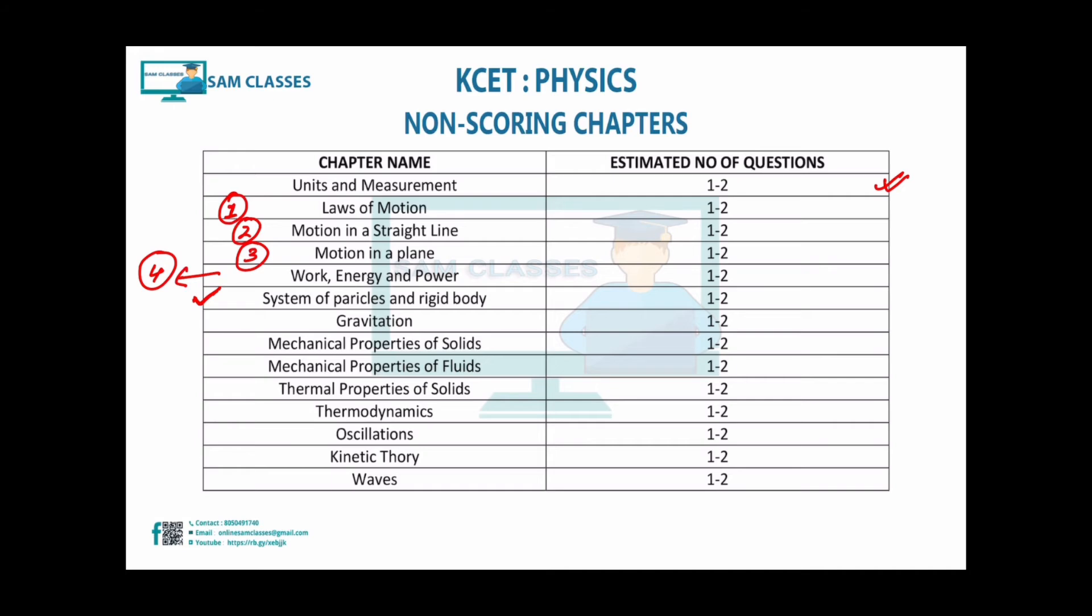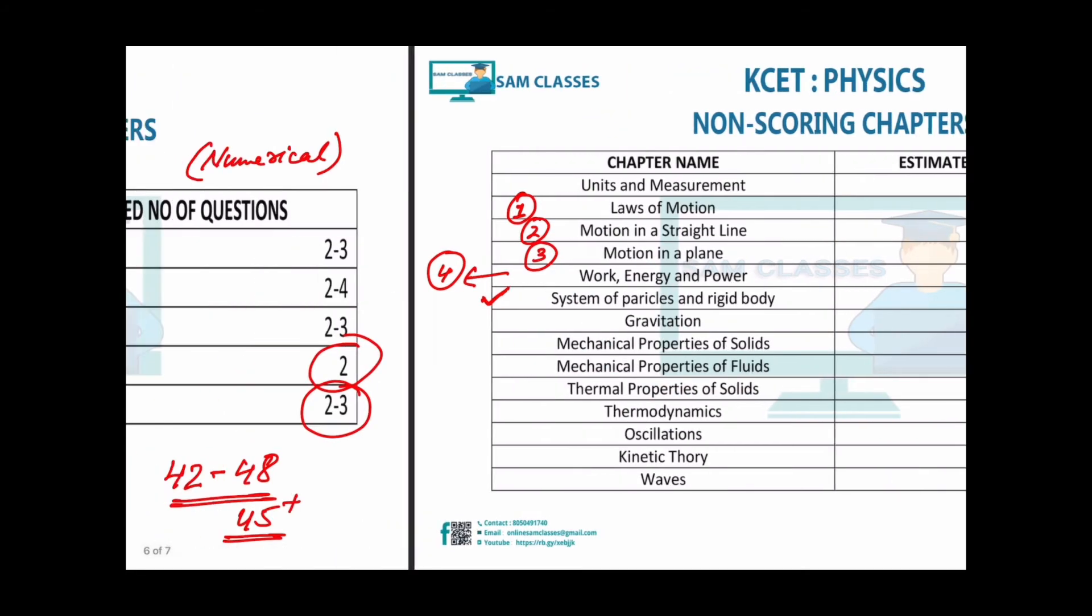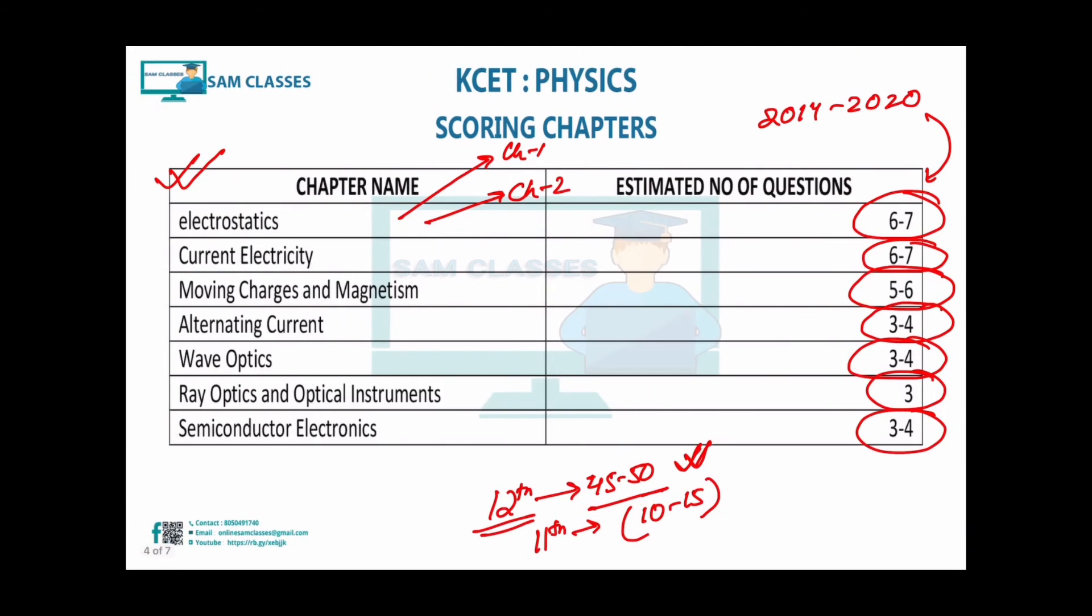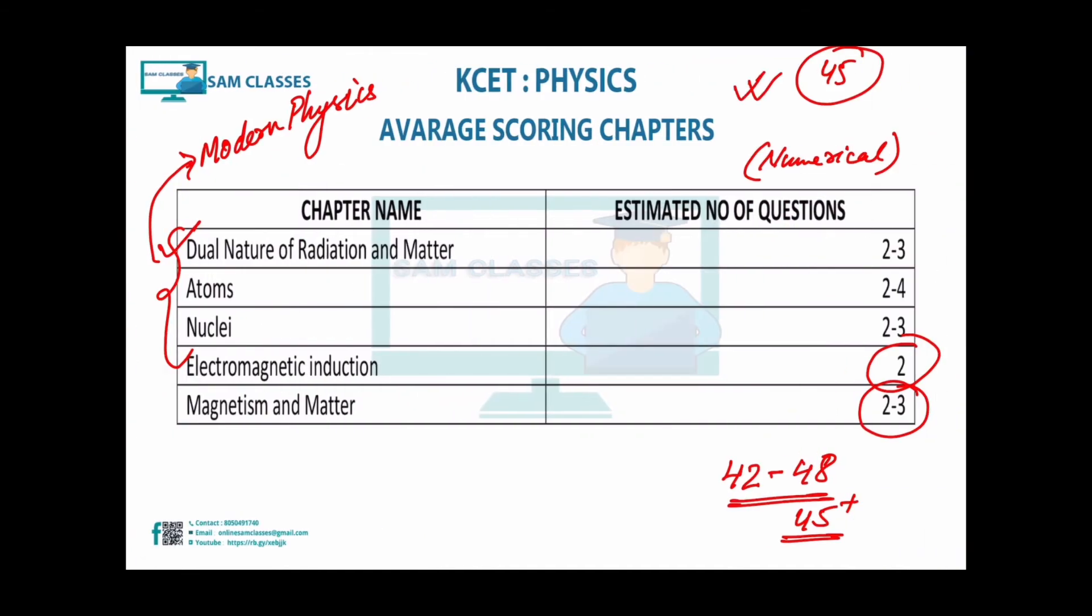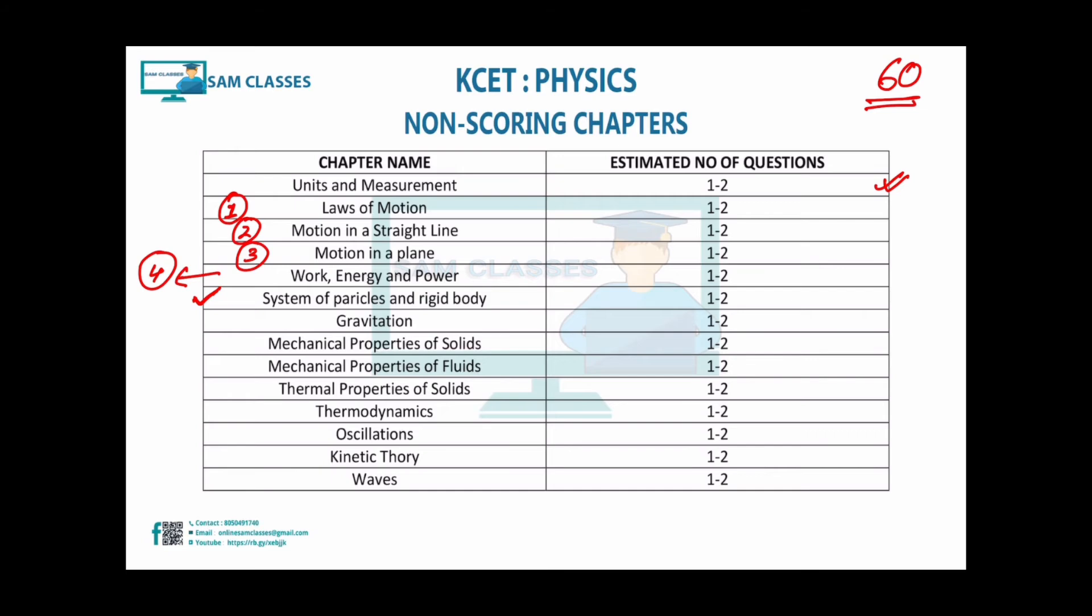These 11th topics you should go through, not in-depth but understand the basic content of each chapter. If you go through all these, it will help if you want to score 60 out of 60. If you just want 45, the scoring and average scoring topics are enough. For 60 out of 60, cover basic formulas, definitions, and concepts of these chapters.